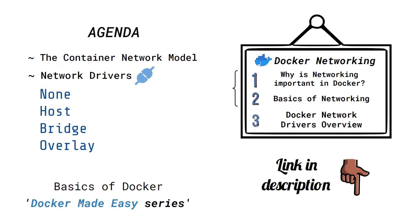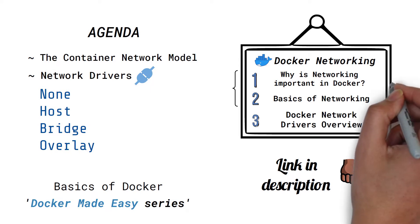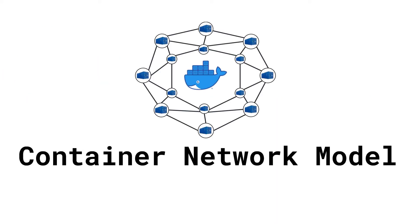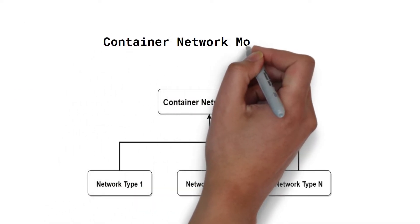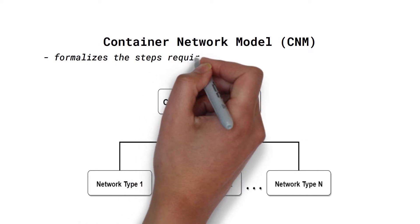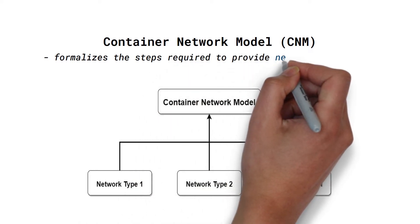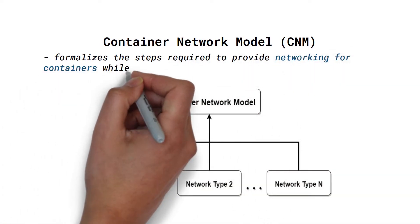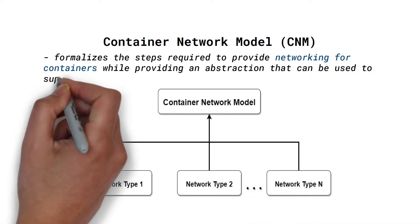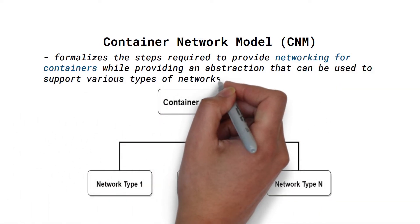Firstly, it's good to know that networking in Docker is made possible by the container network model. The container network model formalizes the steps required to provide networking for containers while providing an abstraction that can be used to support various types of networks.